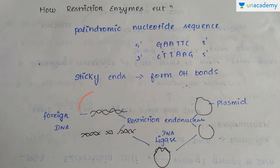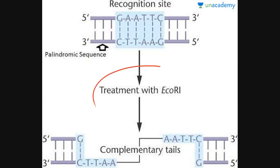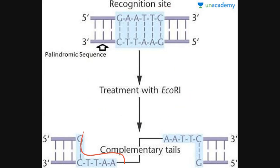This diagram depicts the action of restriction enzymes. This is a foreign DNA, and when it is subjected to the restriction endonuclease, it will cut the DNA at particular sites. This diagram shows the recognition sequence — when EcoRI comes across this sequence, it will cut the DNA leaving sticky ends so that the complementary strands can be ligated.